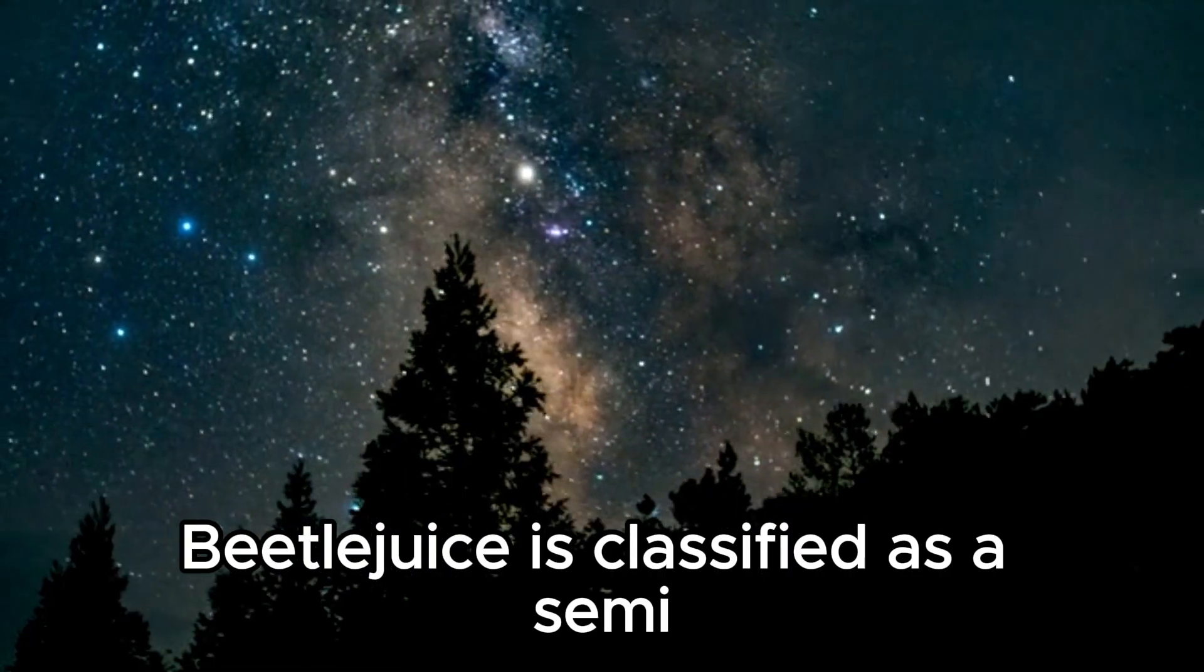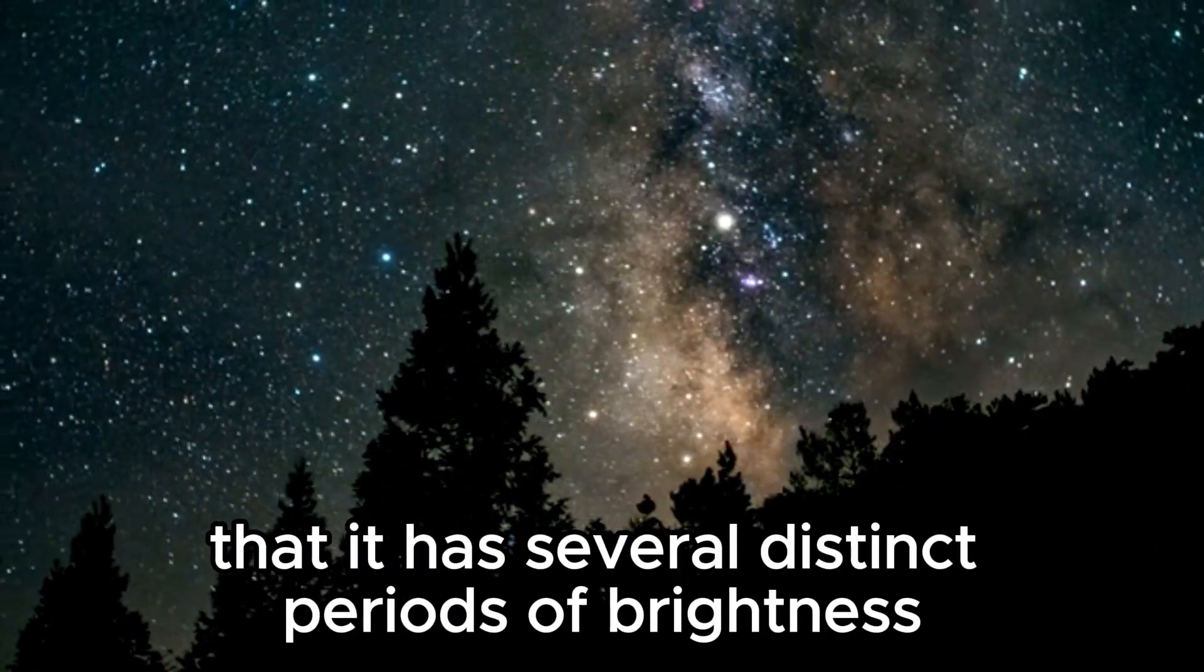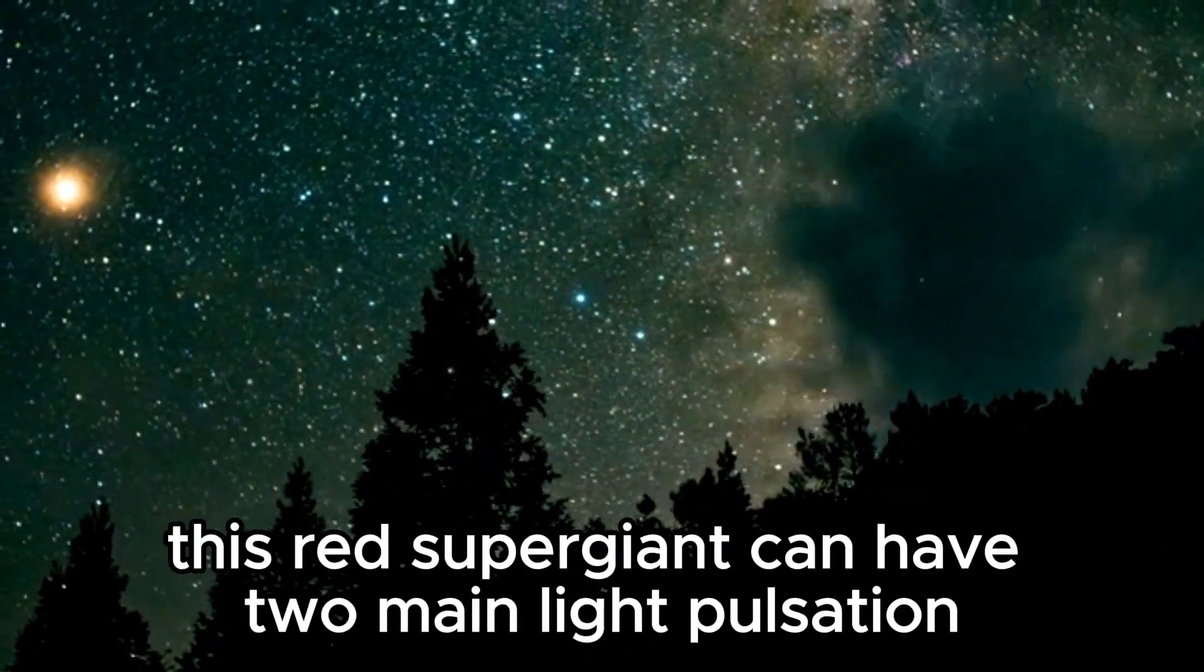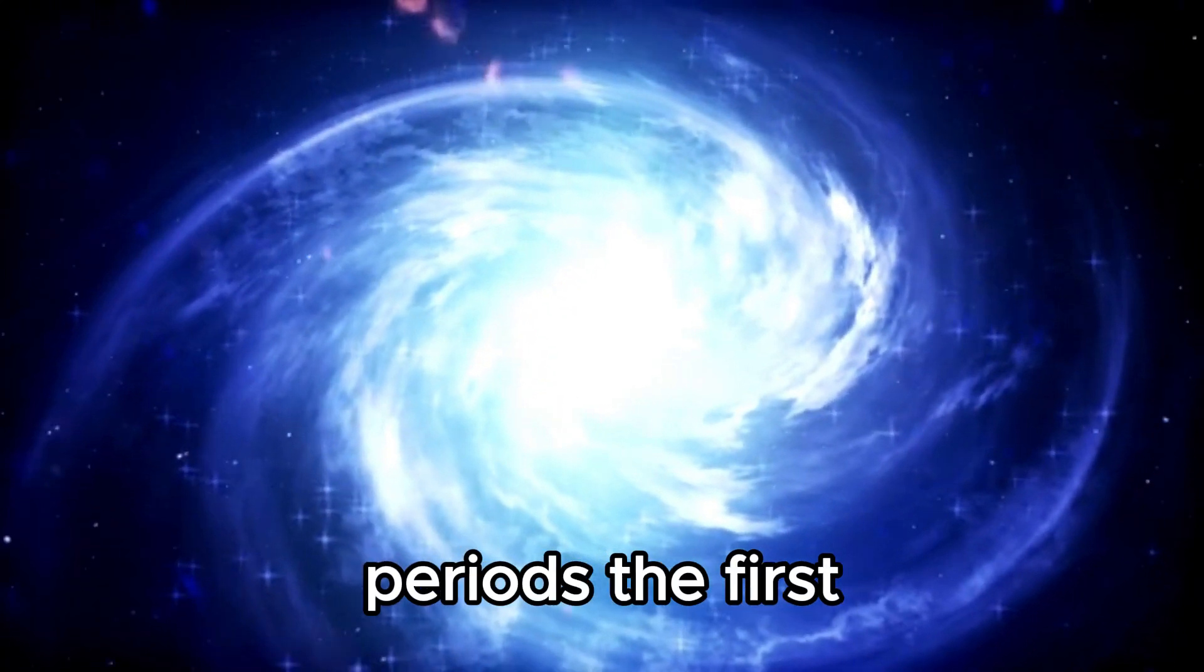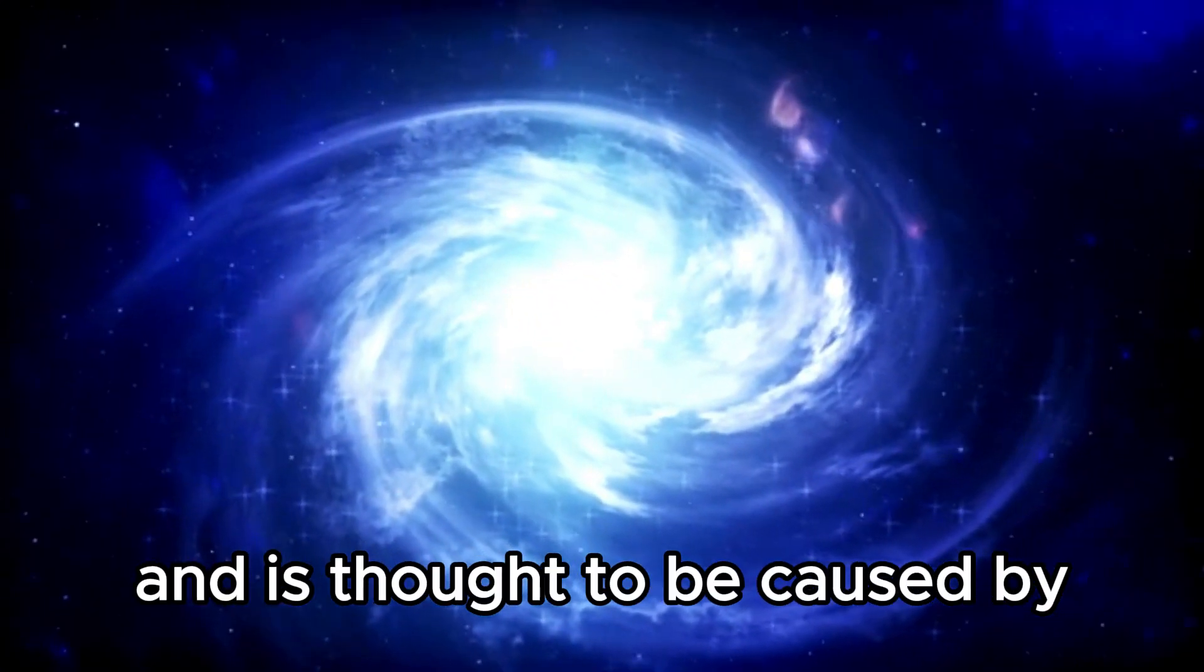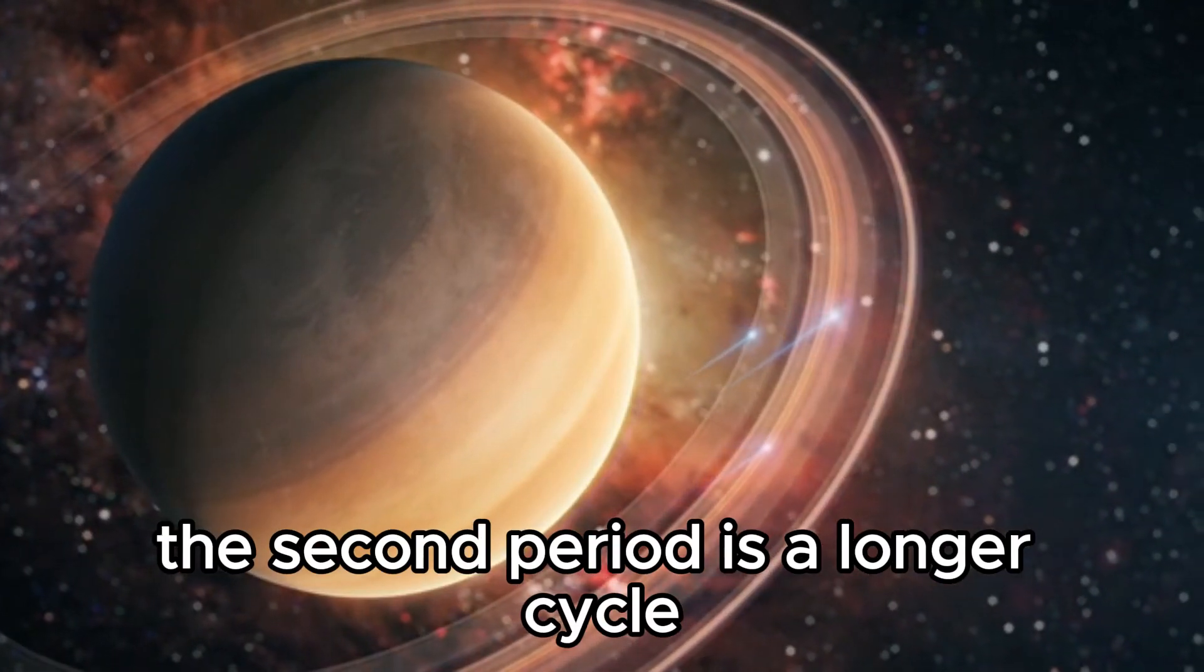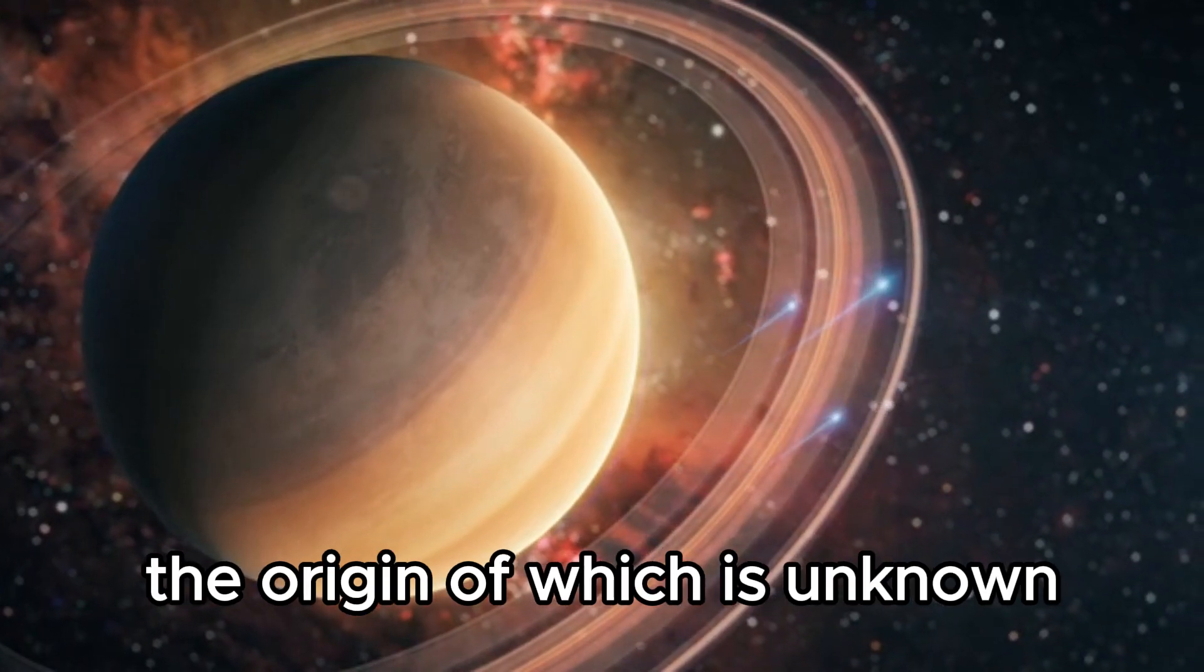Betelgeuse is classified as a semi-regular variable star, meaning that it has several distinct periods of brightness due to fluctuations in its size and temperature. This red supergiant can have two main light pulsation periods. The first cycle lasts 400 days and is thought to be caused by pulsation in the basal state. The second period is a longer cycle of approximately 5.6 years, the origin of which is unknown.